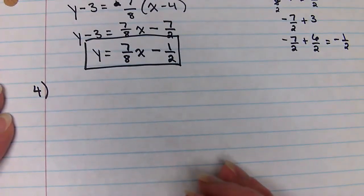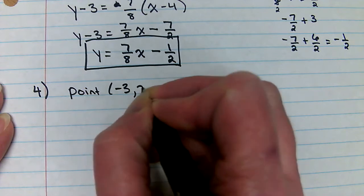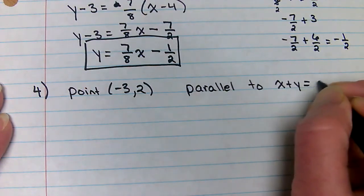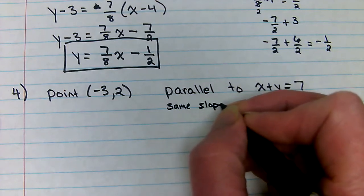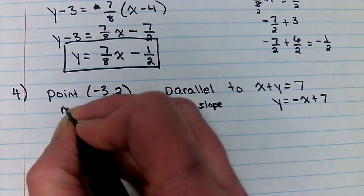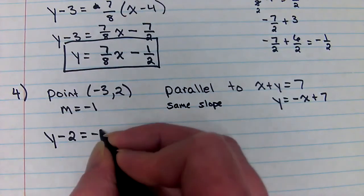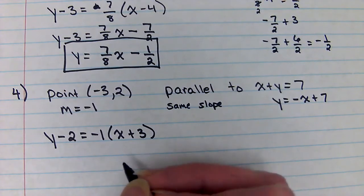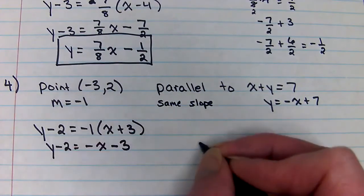Number four says write the slope-intercept form of the equation of the line that passes through the point negative three, two, and is parallel to x plus y equals seven. So let me think about that. Parallel means the same slope. So let me solve for y here. The slope of this line is negative one, so my slope is also negative one. I'm going to use point slope because I like it. Y minus two equals negative one times x minus a negative three, so x plus three. Now it did want the answer in slope-intercept form, so I need to solve for y. And then we would just add the two over.